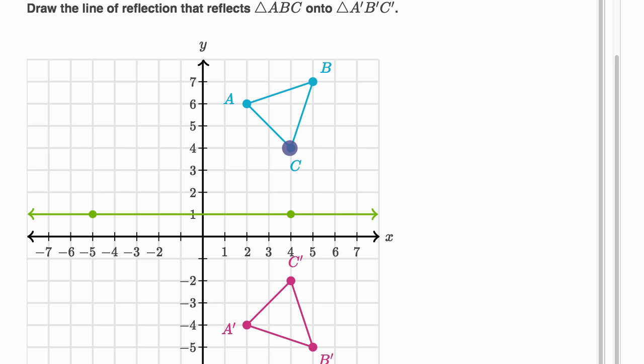So C prime is definitely the reflection of C across this line. C is exactly three units above it, and C prime is exactly three units below it.